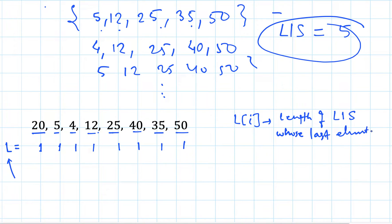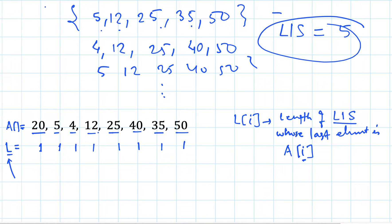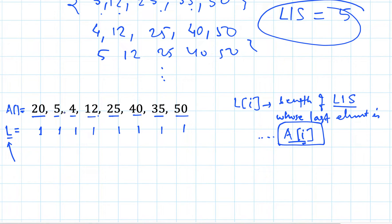So if we pick the i-th element as the last element of the longest increasing subsequence, L[i] stores the maximum possible length of that subsequence. We can pick A[i] as the last element only when A[i] is greater than all the previous chosen elements. We initialize with 1 because we can always pick one element, which is a subsequence of length 1 in itself.